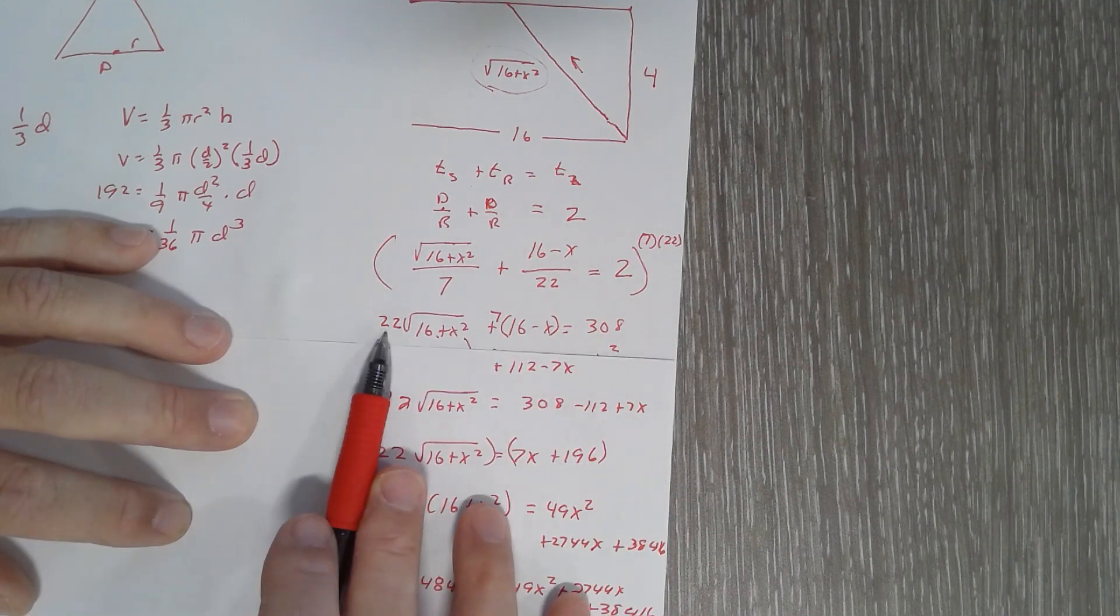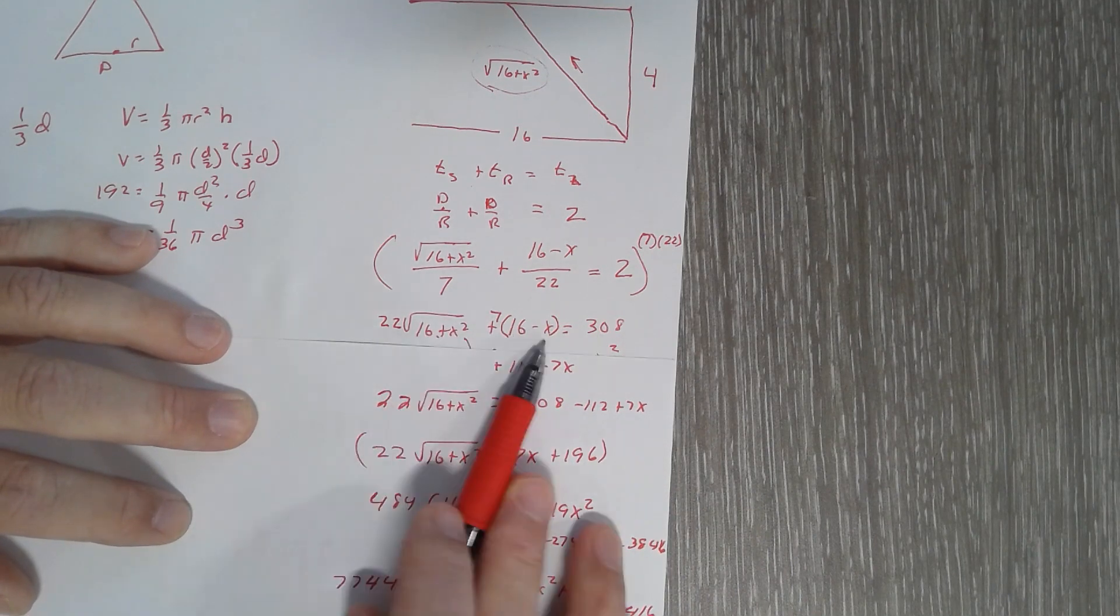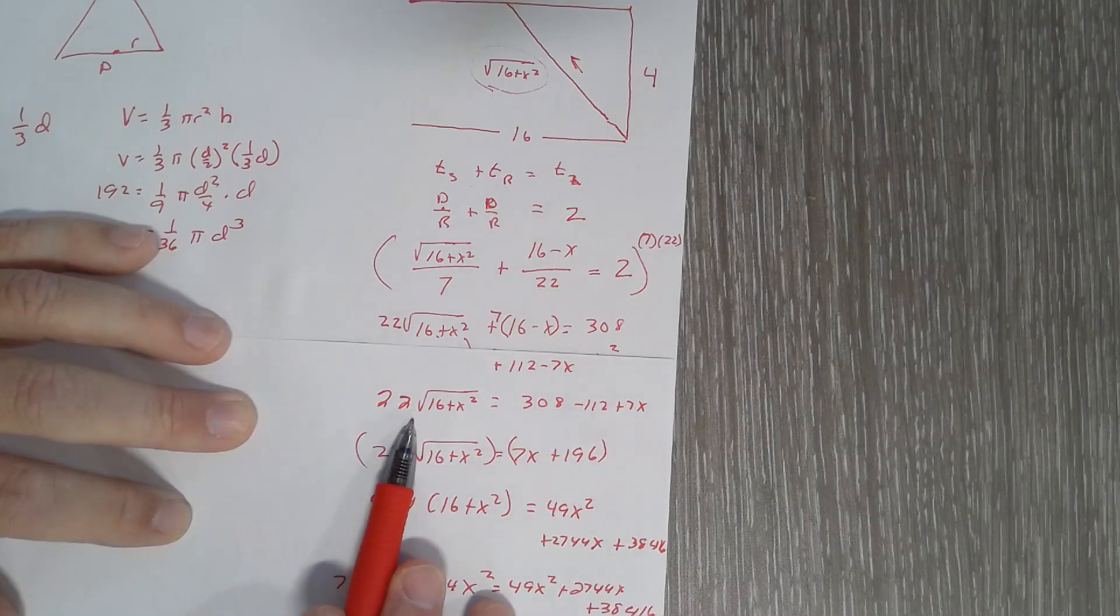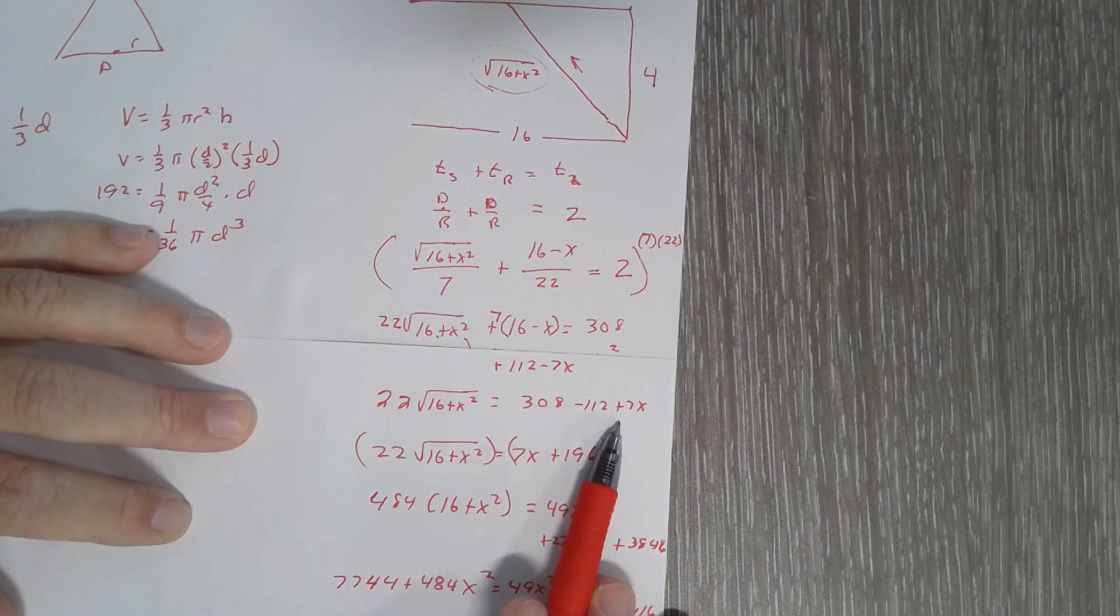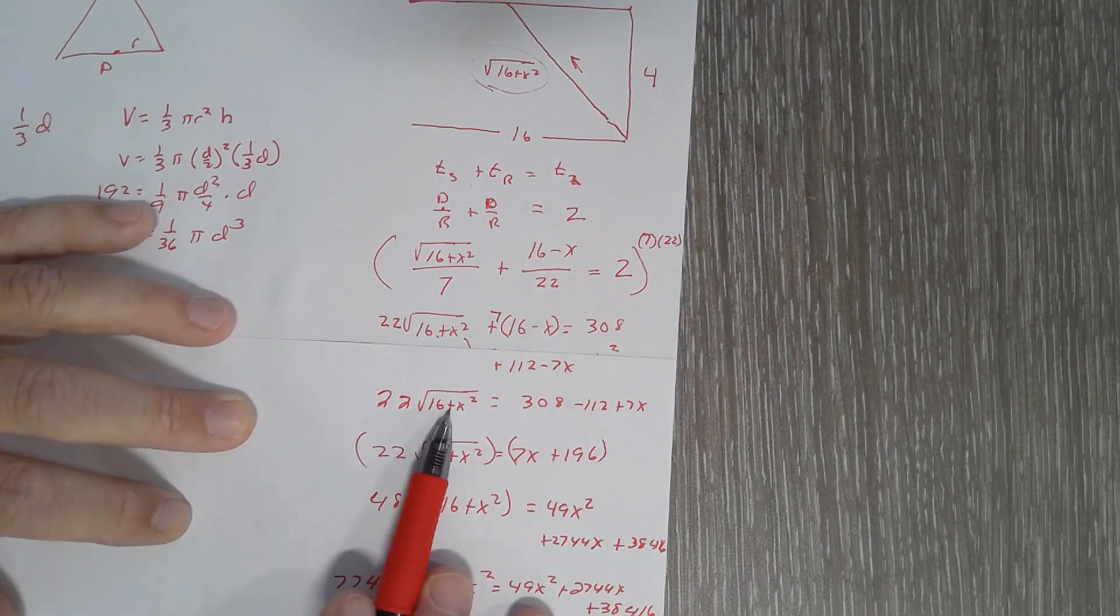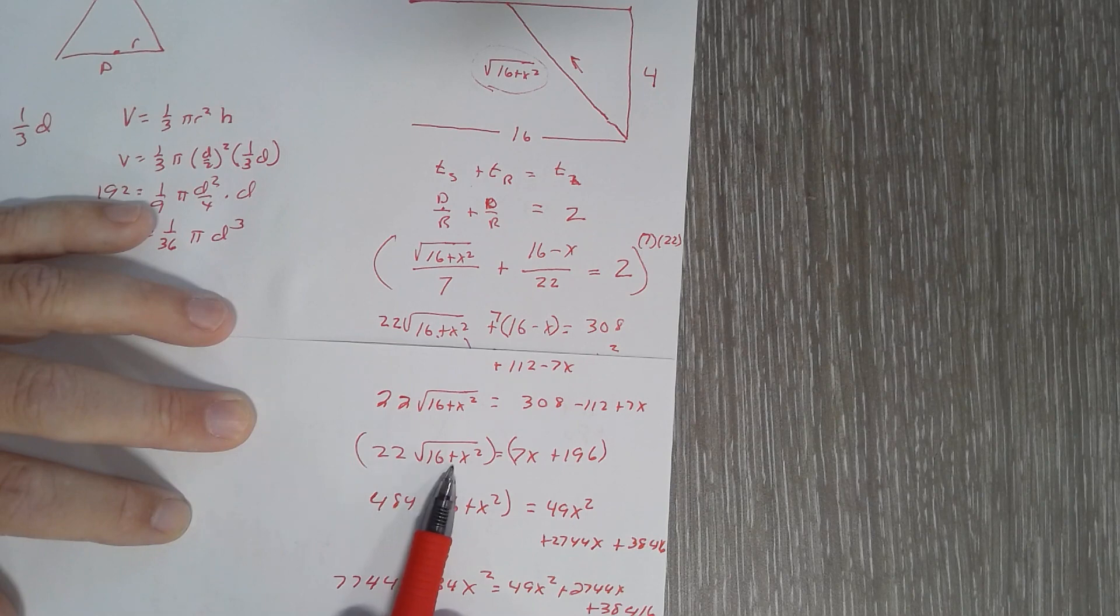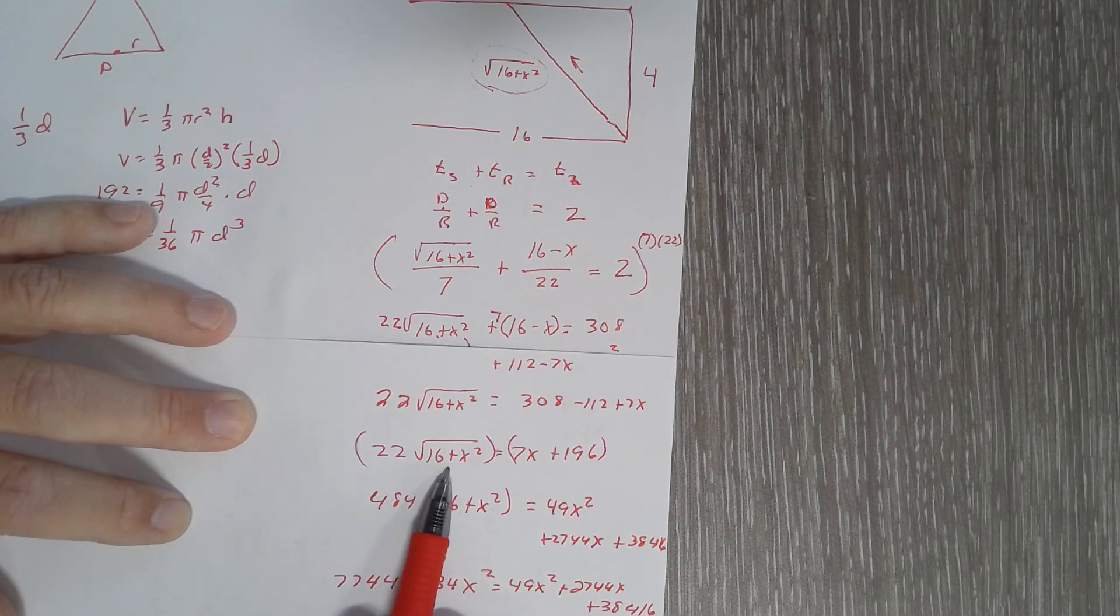Then I multiplied through with the 7, moved everything to one side, and got the square root alone on one side. So I've got 22 times square root of 16 plus x squared equals 7x plus 196.